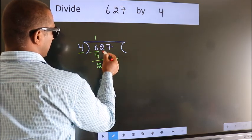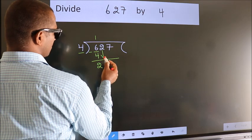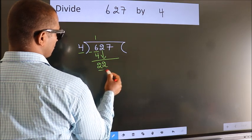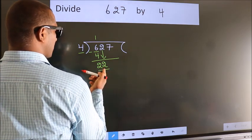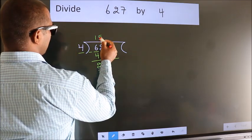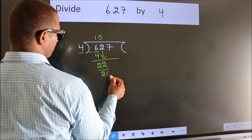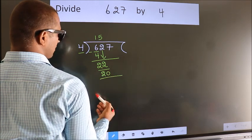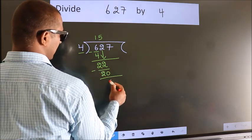After this, bring down the beside number, 2 down, so 22. A number close to 22 in the 4 table is 4 fives 20. Now we subtract and get 2.